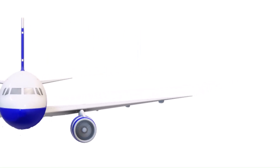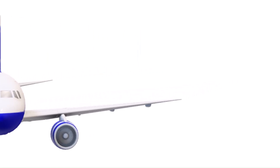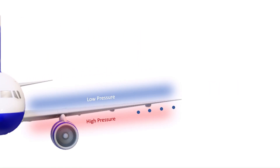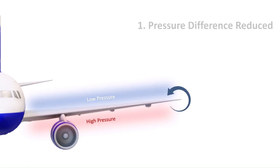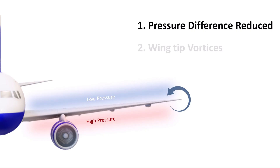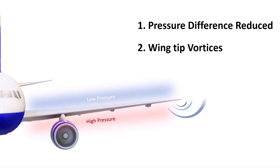During flight, high-pressure air likes to escape from the bottom of the wing, moving around the wingtip to the top. This creates two undesirable effects: it reduces the pressure difference between the upper and lower surfaces, and hence reduces lift. It also leads to wingtip vortices and increases drag due to lift.